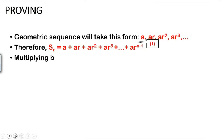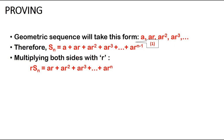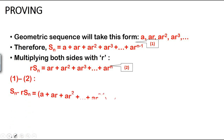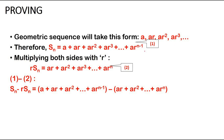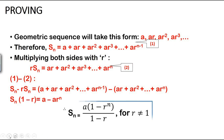To prove the Sn formula, we note that Sn equals a + ar + ar² + ar³ + ... + ar^(n-1). Multiplying by r gives a second equation. Subtracting the first equation from the second, everything cancels out except a minus ar^n, giving us Sn = a(1 - r^n) / (1 - r).